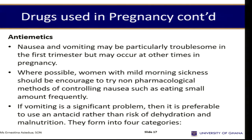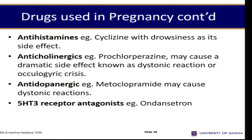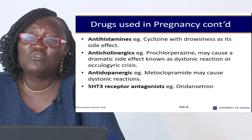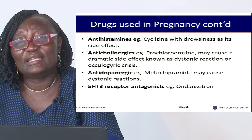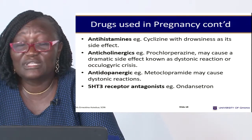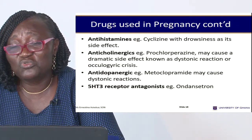When nausea and vomiting goes beyond the woman's tolerance and becomes severe, we need anti-emetics, but they should not be abused. Anti-emetics form several categories: antihistamines, anticholinergics, antidopaminergics, and 5-HT3 receptor antagonists. Cyclizine is the commonly used one, and some also use prochlorperazine, though this may cause dramatic side effects. The advice is to look for drugs that are commonly used and for which no registered side effects have been reported.